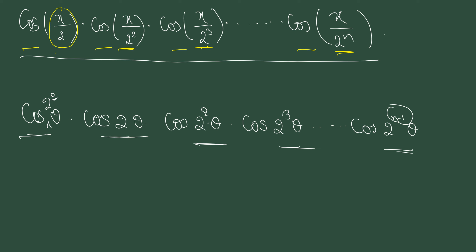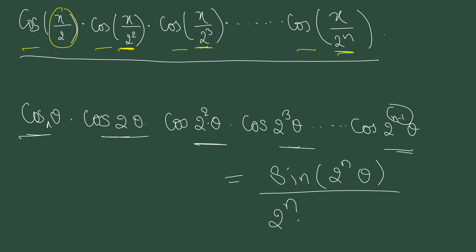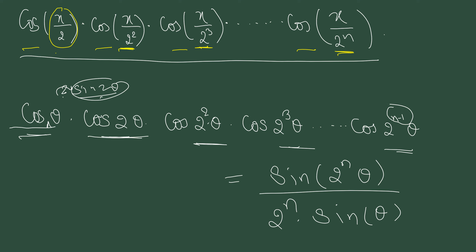The value of this product is sin(2^n θ) / (2^n · sin θ). How was this derived? We multiplied and divided by 2 sin θ. So 2 sin θ · cos θ = sin 2θ. Then multiplying and dividing by 2 again, 2 sin 2θ · cos 2θ = sin 2²θ. Continuing this way, 2 sin 2²θ · cos 2²θ = sin 2³θ, and so on.